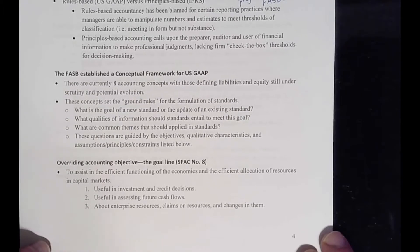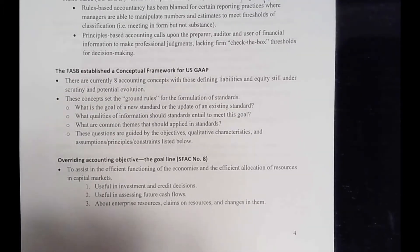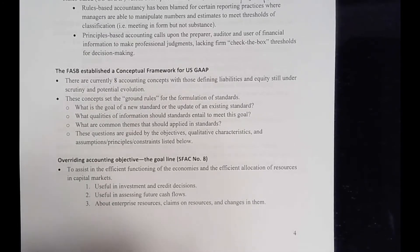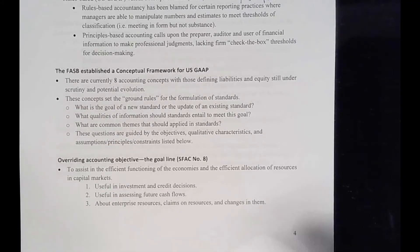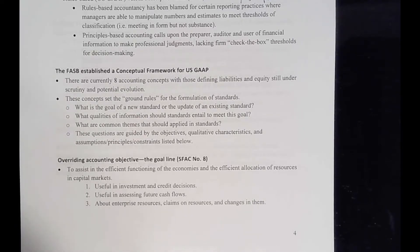They set the ground rules for the formulation of standards. Basically, these concepts outline what is the goal of a new standard or the update of an existing standard — what are we trying to accomplish, what qualities of information should these standards entail in order to meet that goal, and what are the common themes that should be applied in standards. This is why we have the 'why' of all our standards.